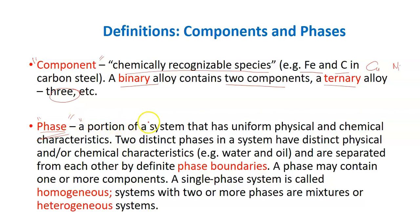The next term is phase. A phase is just a portion of a system that has uniform physical and chemical characteristics. Two distinct phases in a system will have distinct physical and/or chemical characteristics. For example, water and oil are two distinct phases — they have distinct physical and chemical characteristics.